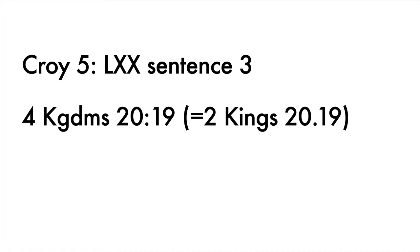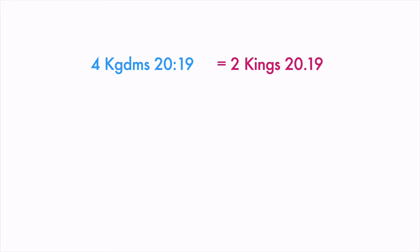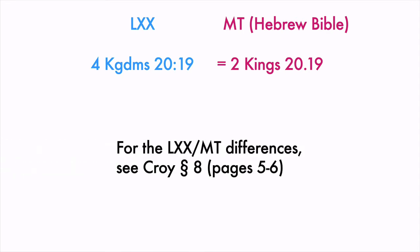This sentence is taken from what is called Four Kingdoms 20:19. What is Four Kingdoms? That's the same as 2 Kings chapter 20, verse 19 in your English Bible. Your English Bible is taken from the Hebrew Bible, so this is one of the cases where there is a different chapter and number recorded in the Septuagint than in the Masoretic Text — that is the Hebrew Bible — from which our English Bibles are derived. If you need a refresher on that, look at Croy paragraph 8, pages 5 and 6, where he talks about the different titles of books and different chapter numberings.